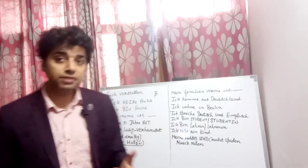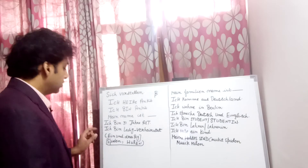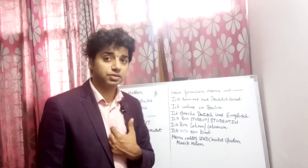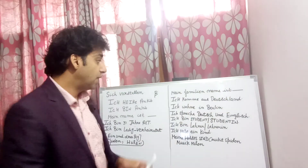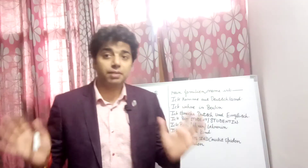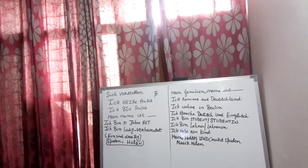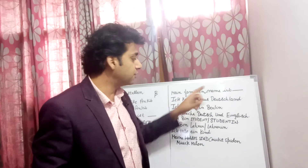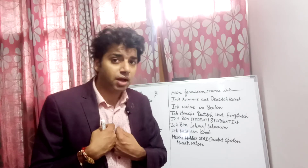Speak after me: 'Ich heiße,' 'Ich bin,' 'Mein Name ist.' Now I can also tell my family name. For example, my family name is Malhotra, because I am Ankit Malhotra. So I will say 'Mein Familienname ist Malhotra.'